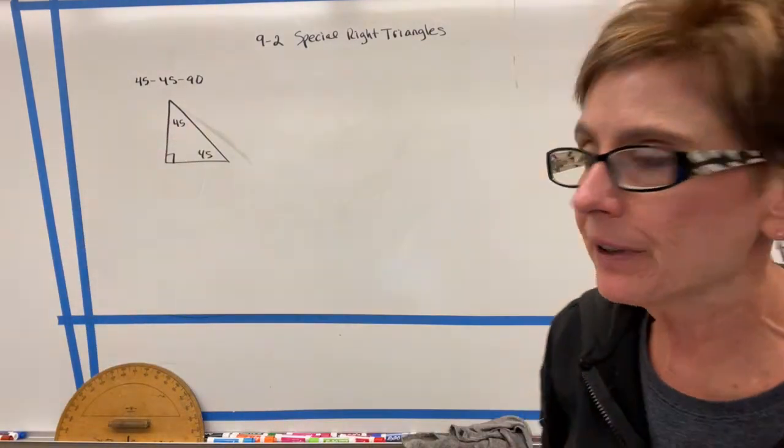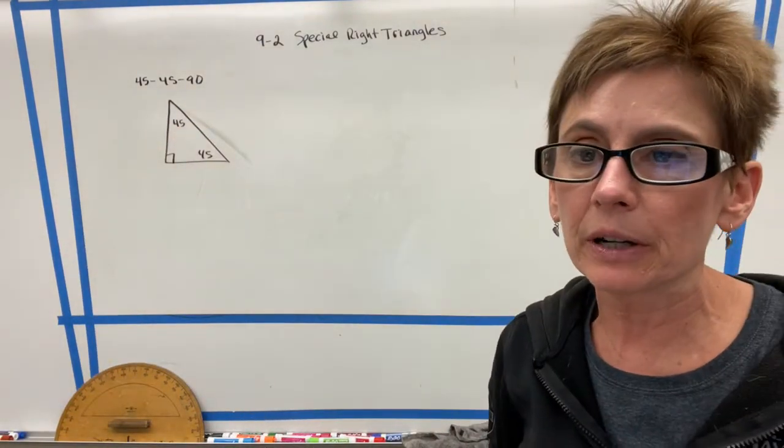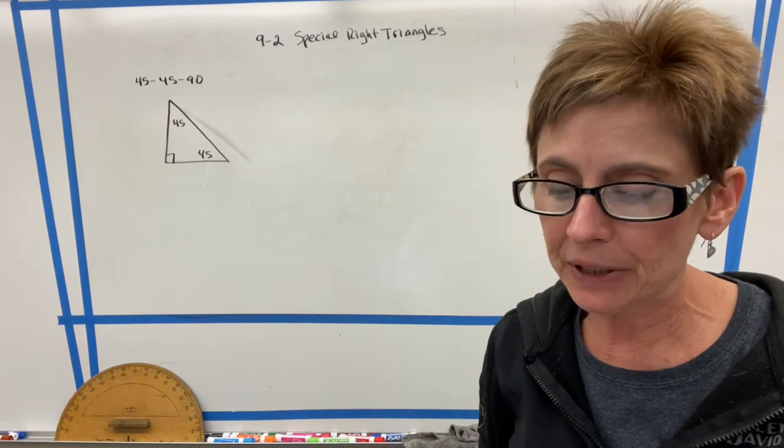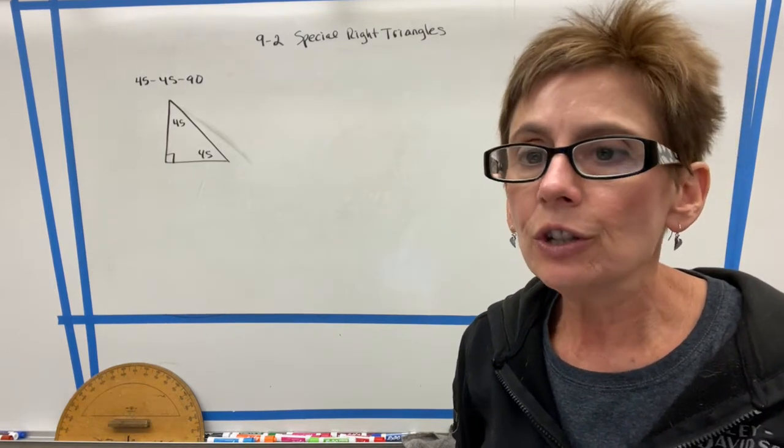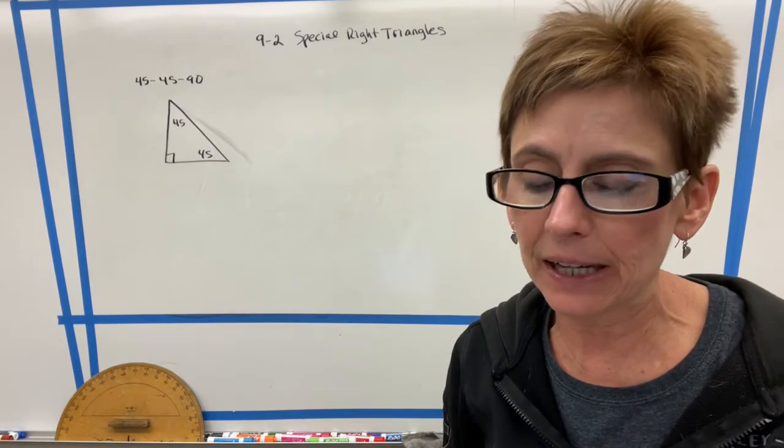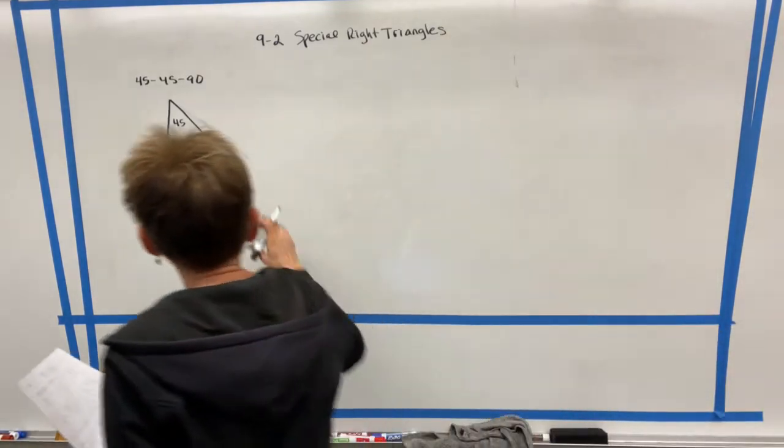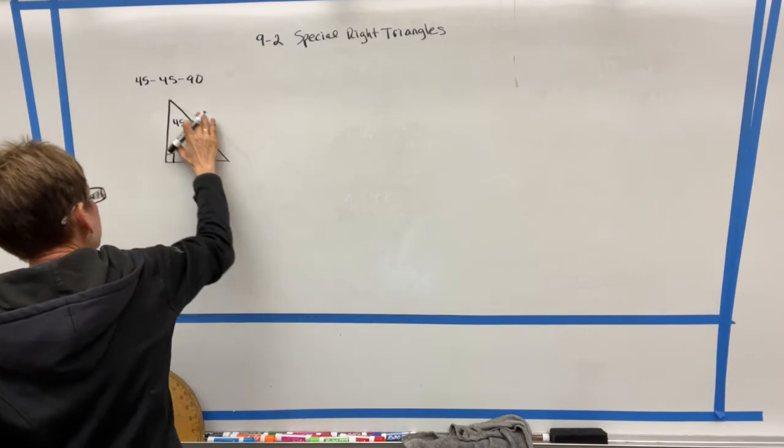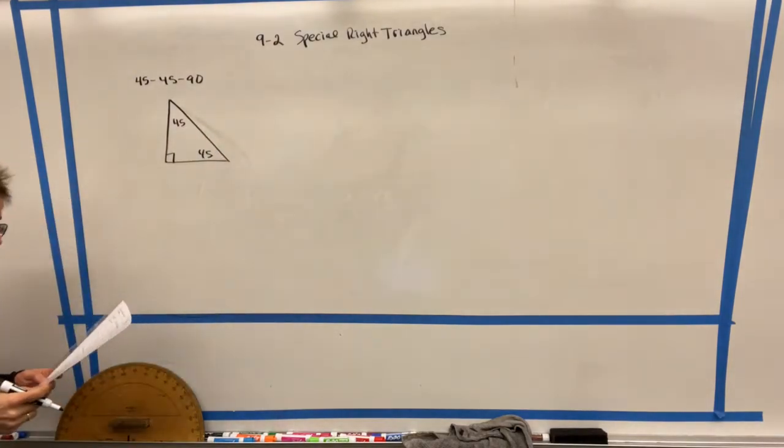Because let's say, for example, that the right angle is marked and one 45-degree angle is also marked. You would know that the other angle had to be 45 because they all have to add up to 180. So they don't have to have all three marked for it to be a 45-45-90.